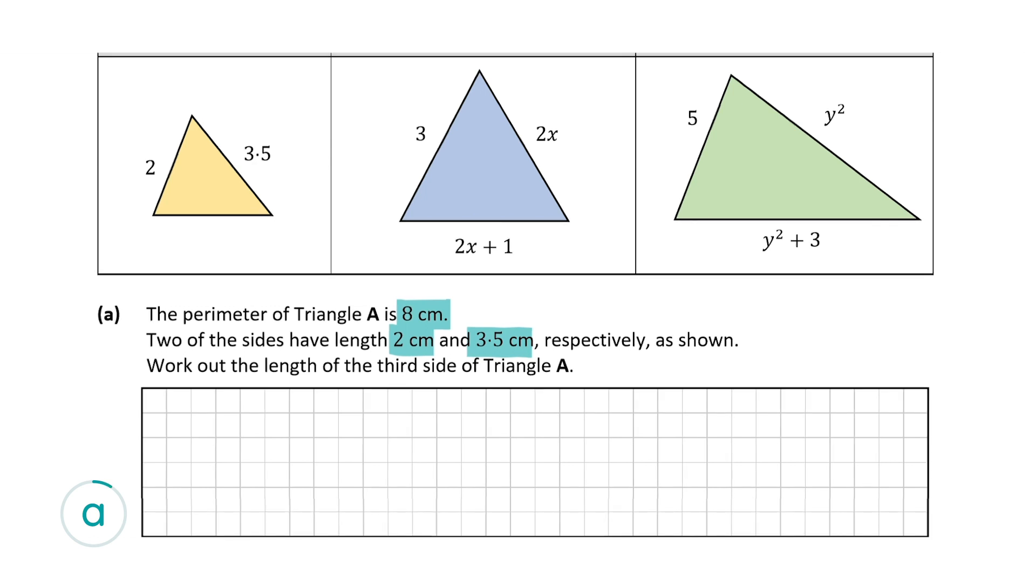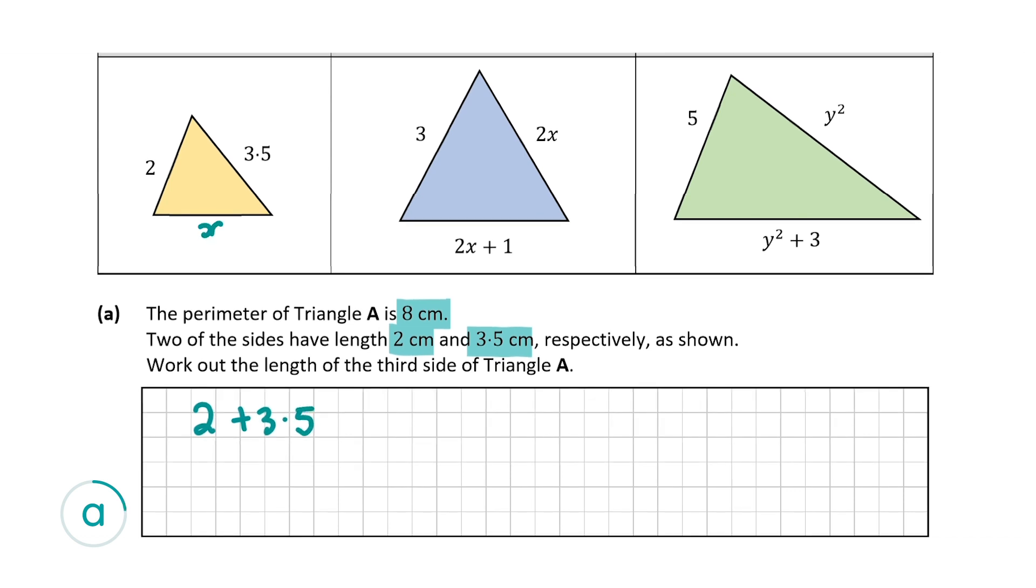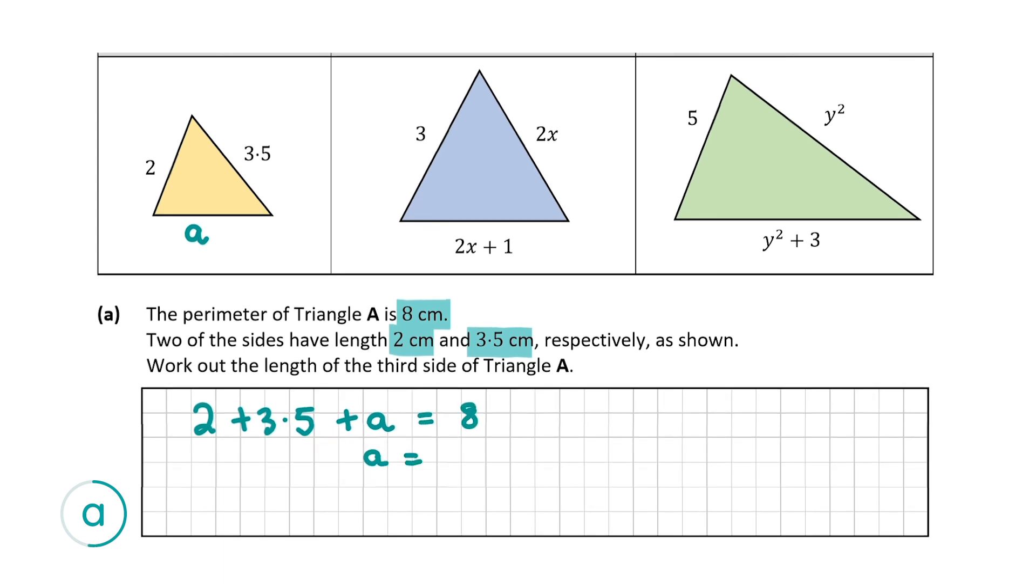So we know that the three sides must add up to 8 centimeters because that's the perimeter. So we have 2 plus 3.5 and we'll call it a different letter just because we have X further on in the question. I'm gonna call it A. So 2 plus 3.5 plus A is equal to 8. So A is equal to 8 minus 2. We're bringing across these values but we must change the signs. So we take away 3.5 as well.